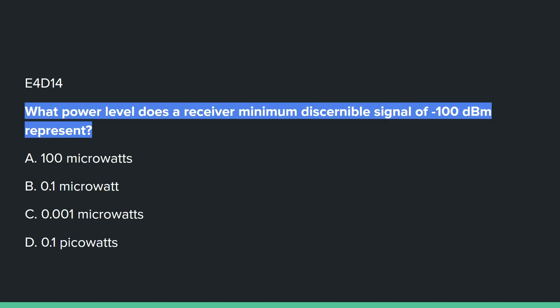E4D14: What power level does a receiver minimum discernible signal of negative 100 dBm represent? Answer D: 0.1 picowatts.